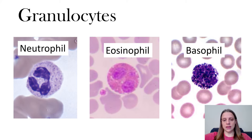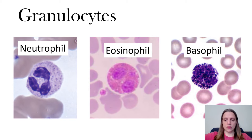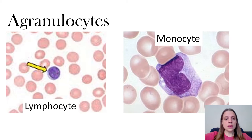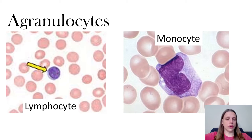In the eosinophil you're seeing two evenly round nuclei, and sometimes you can see that the two round nuclei are connected by a little strand in between them, so it looks like an old telephone — that's how you can tell it's an eosinophil. For the basophil, you can tell because you can't even see a nucleus; it's so dark.